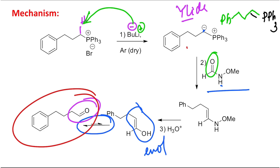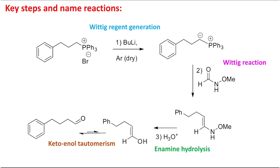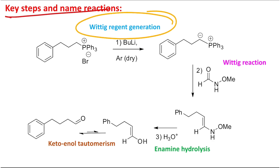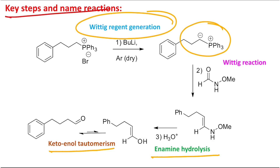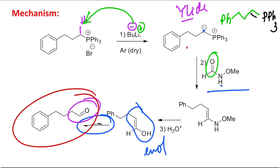The key steps and name reactions associated here: first step is Wittig reagent generation — or more accurately, ylide generation. Second is the Wittig reaction. Third is enamine hydrolysis. Fourth is keto-enol tautomerism.